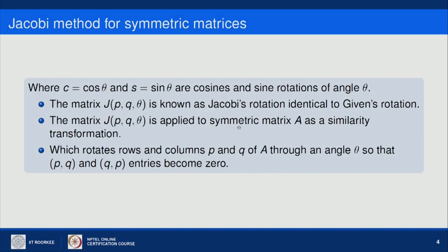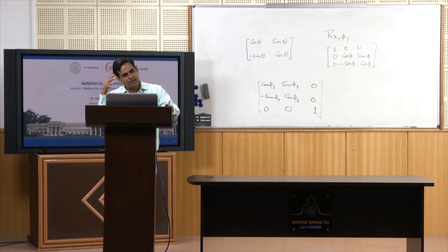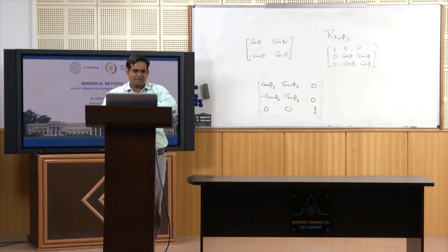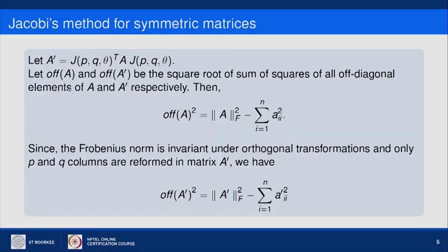The matrix J_pq(theta) is applied to symmetric matrix A as a similarity transformation. Once applied, it rotates rows and columns P and Q of A through an angle theta so that the (P,Q) and (Q,P) entries become 0. These are two off-diagonal entries, and since the method applies only to symmetric matrices, A_pq equals A_qp. We denote the similarity transformation as A' = J-transpose · A · J.